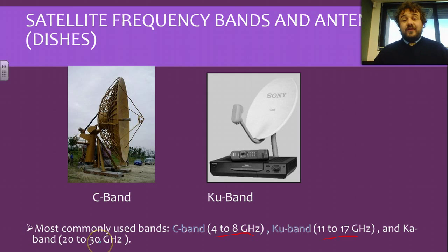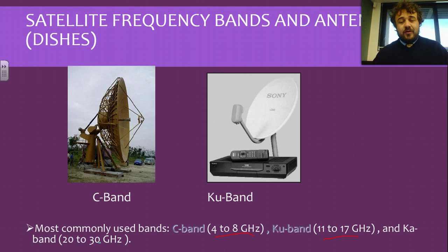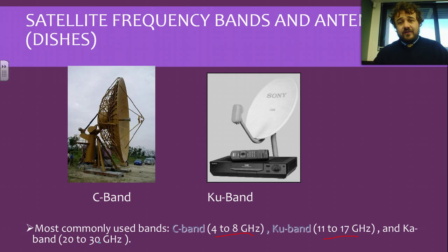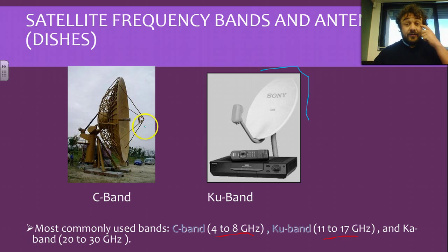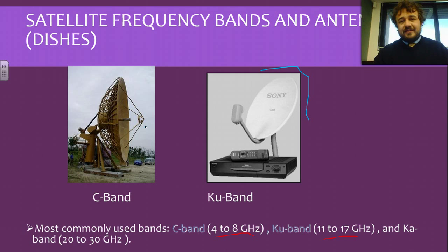The KA band runs with a very large frequency and consequently has a really small dish because it has a very small wavelength. The KU band is in the middle of the road — those are the sorts of dishes you can fit on your house. The C band has these big ones, because their frequency is quite small comparatively — four to eight gigahertz.